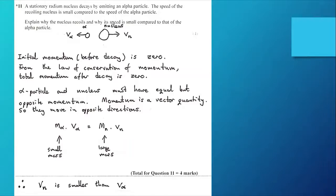That would mean, taking right to left as being positive, mn times vn minus m alpha times v alpha equals zero. A simple rearrangement of that leads to the equation I've got below. I've also said the alpha particle and the nucleus must have equal but opposite momentum.